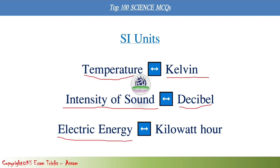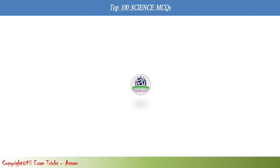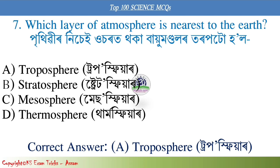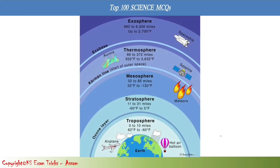Electric energy is used for power. The atmosphere layers include: troposphere and stratosphere.